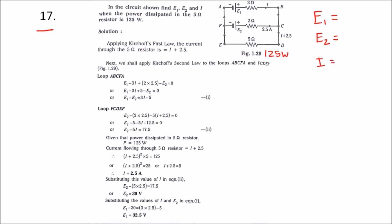Using the first law, we can find that the current flowing through the 5 ohm resistance will be I plus 2.5. This is I and this is 2.5, so this current will flow in the 5 ohm resistance.